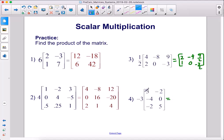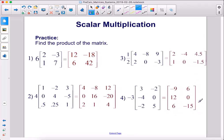And here we have a 3 by 2 matrix. 3 times –3 is –9, –4 times –3 is positive 12, negative 2 times negative 3 is positive 6, 0 times negative 3 is 0, and 5 times negative 3 is negative 15. And there are the final two matrices.